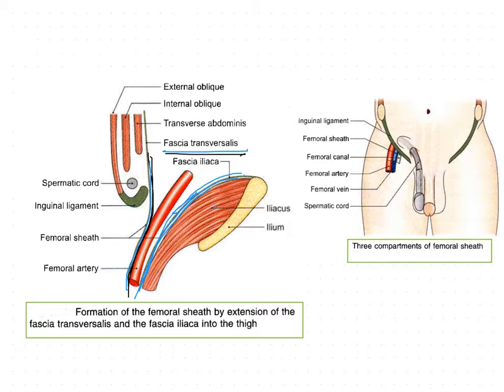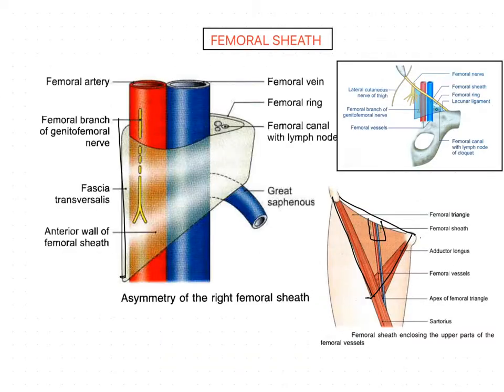The femoral sheath is asymmetrical — not all sides are equal. Its lateral wall is vertical, while the medial wall is oblique, directed downwards and laterally.